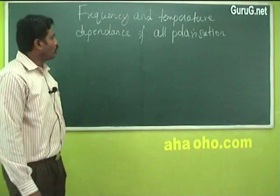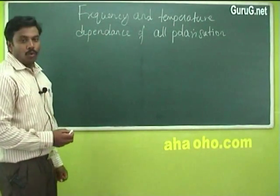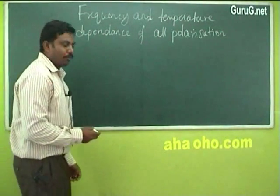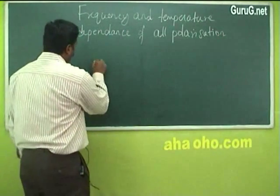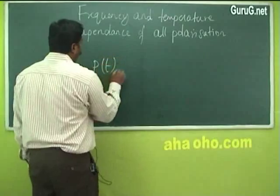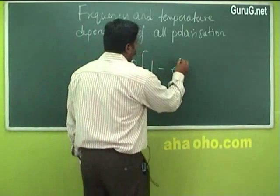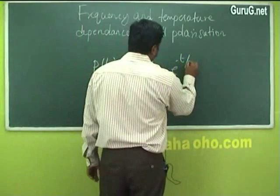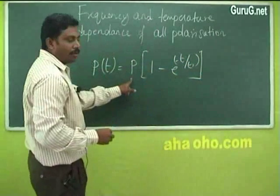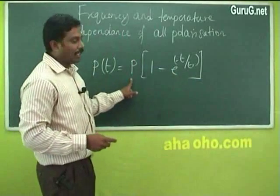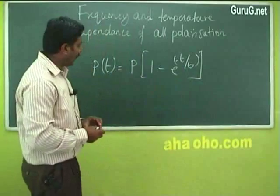Frequency and temperature dependence of all polarization. When the electric field is applied, polarization occurs as a function of time. It is given as P(t) = P(1 - e^(-t/tr)), where P is the maximum polarization and tr is the relaxation time.